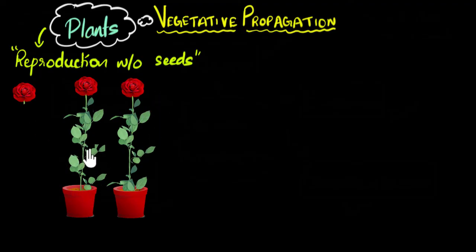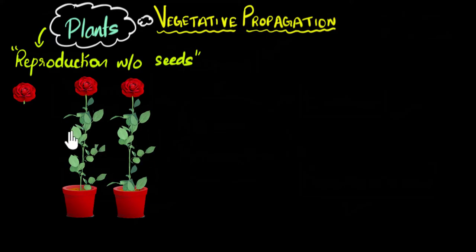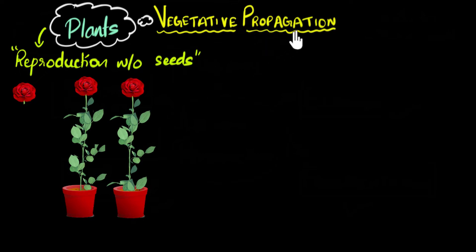In that example we took stem cuttings, but you could also take root cuttings, or even a leaf. Basically, you take any vegetative part of the plant. The stem, the root, and the leaves together are called the vegetative parts of the plant. If you take the vegetative part and sow it, you can make new plants from that — and that's why this is called vegetative propagation.